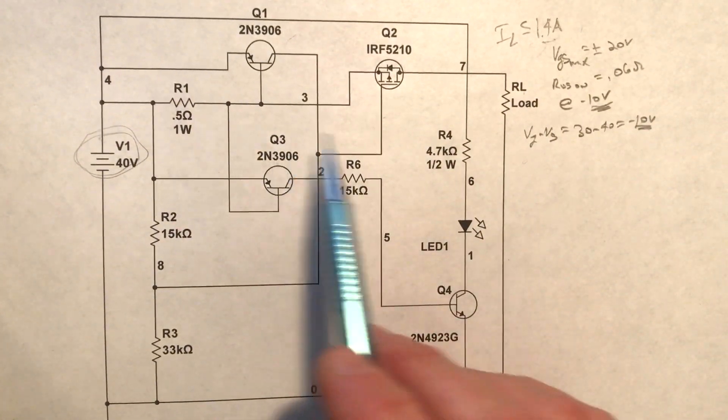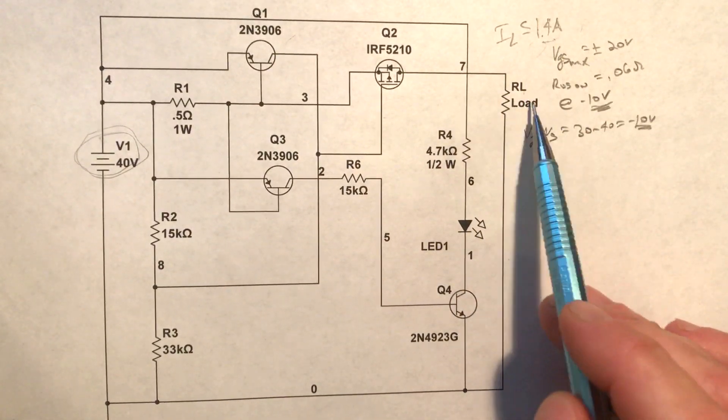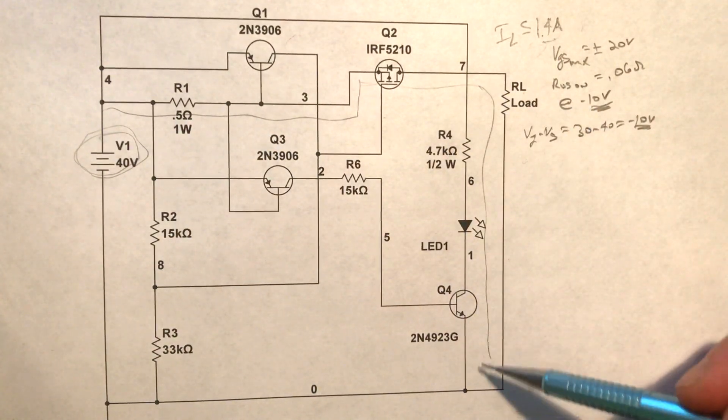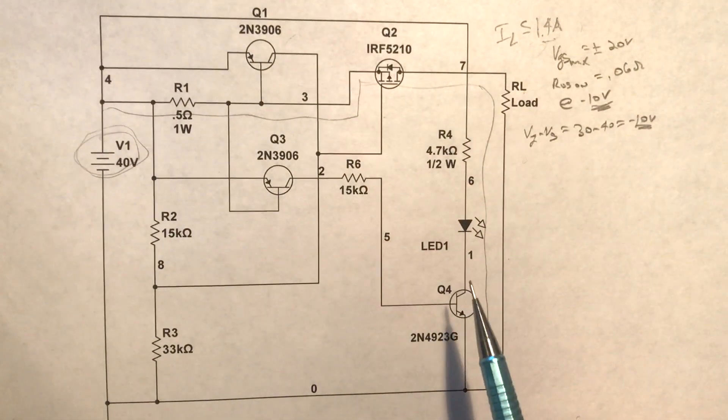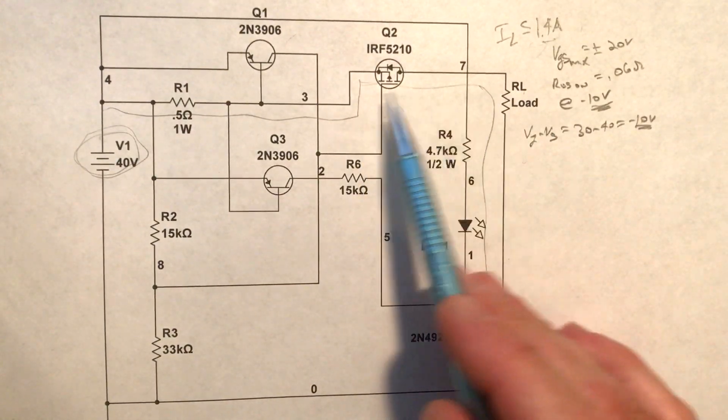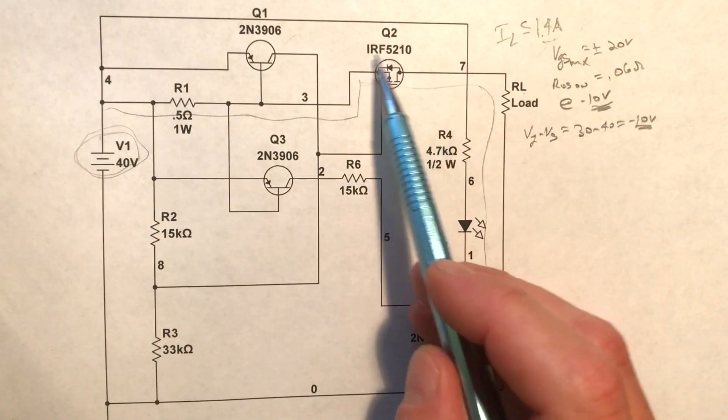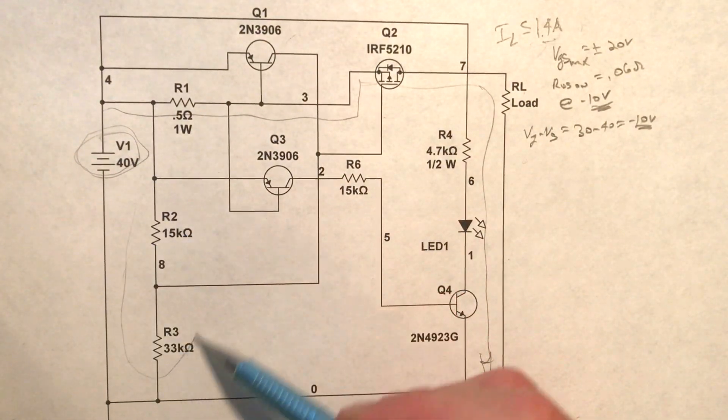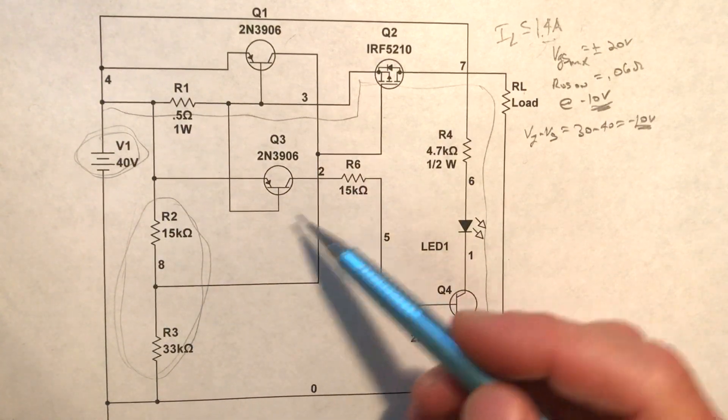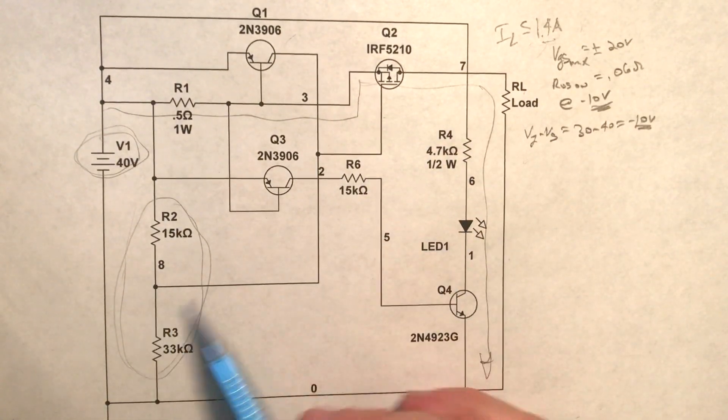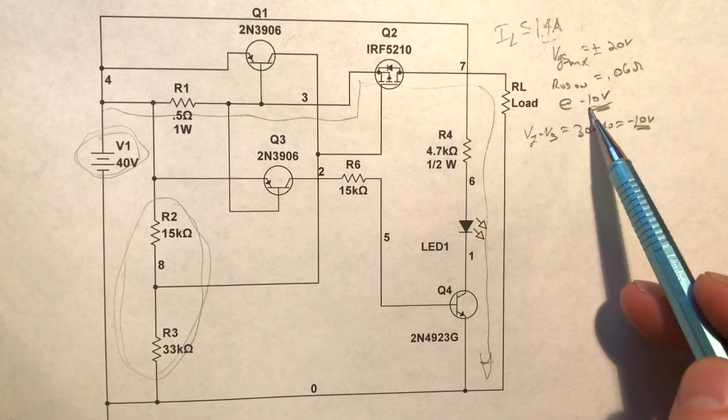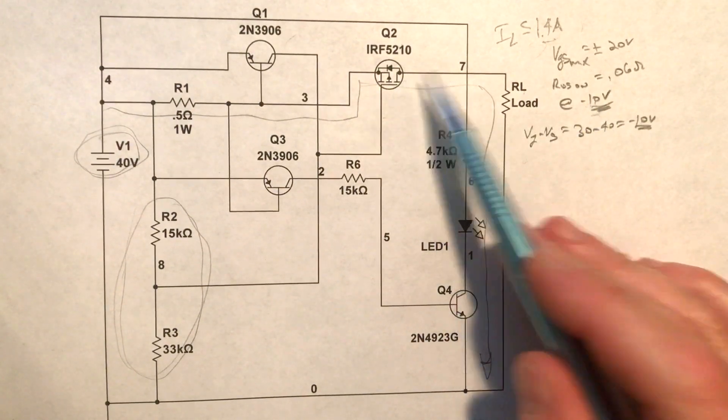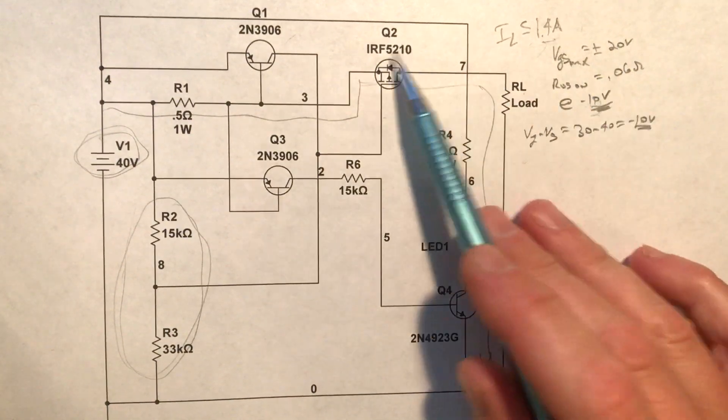All right, so in general when we're not in a current limiting mode, the load is large enough so that we're not having to limit our current. Obviously current is going to flow through this path here, down through our load and return through ground. What we want to ensure is so that we don't mess with or limit this current until we reach our current limit value—is we want this MOSFET to be fully on. The way we accomplish that is by this little bias circuit right here. Doing this, we want to ensure that it's fully on. We want the V sub GS to be at least minus 10 volts and we really want it to be a little bit lower than that just to ensure that this guy is fully on, but at the same time we don't want to exceed this minus 20 volts or we'll actually destroy this device.